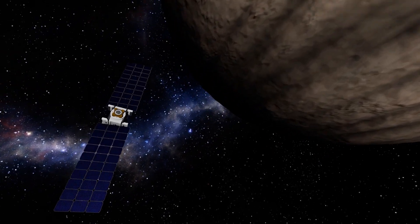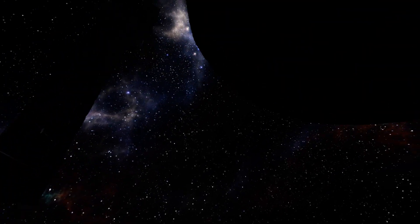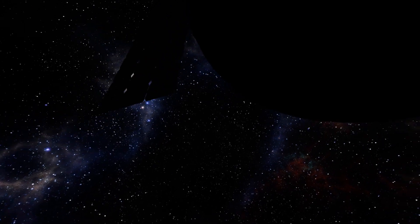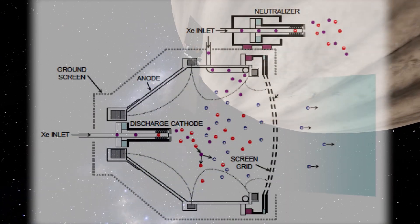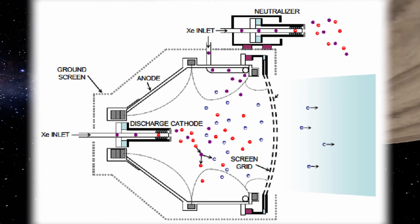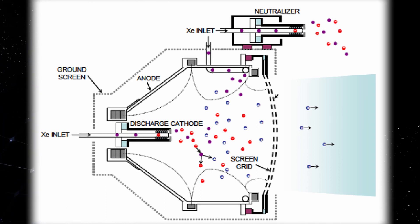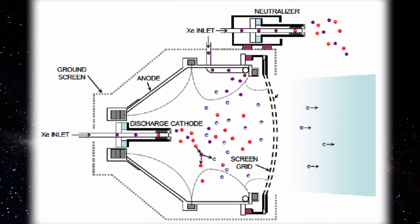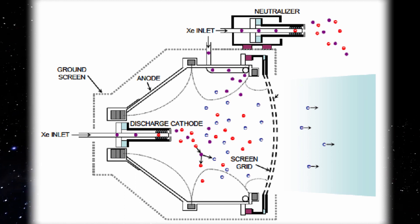The specifics of how an ion engine works is pretty complicated, unsurprisingly, but the basic principle is fairly easy to understand. A stream of gases, usually a noble gas like xenon, is released into what's called an ionization chamber. There, they are bombarded by a stream of electrons which strip the other electrons off of the gases and ionize them, making them a positively charged particle.